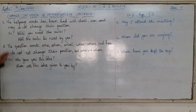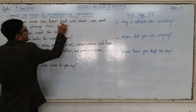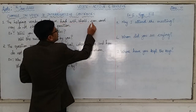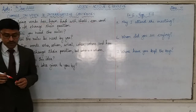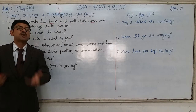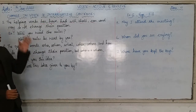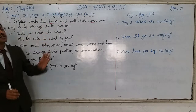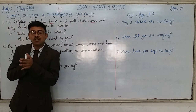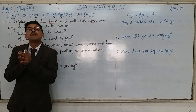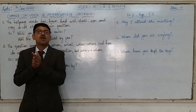Number one: the helping verbs — has, have, had, will, shall, can, and may. These are all the helping verbs we have learnt in English grammar so far. They do not change their position. In active, if a helping verb is in the beginning of the sentence, it will remain in the beginning of the sentence in passive voice also.